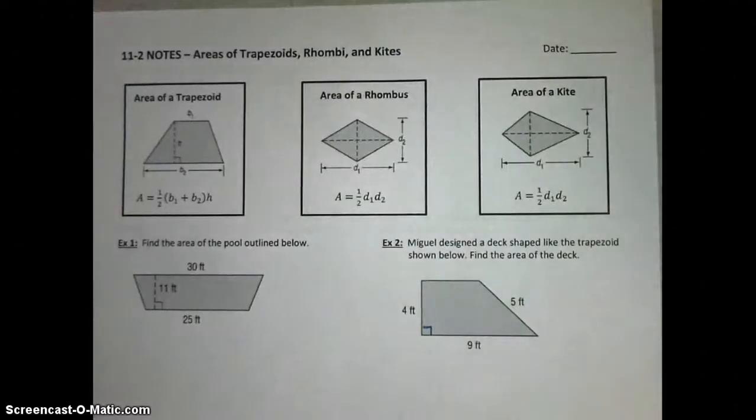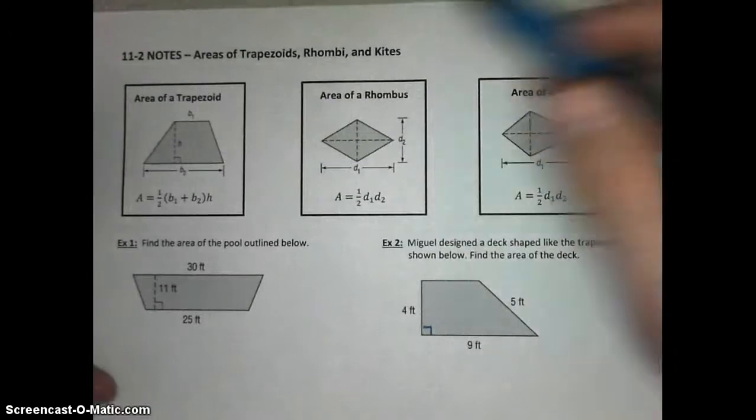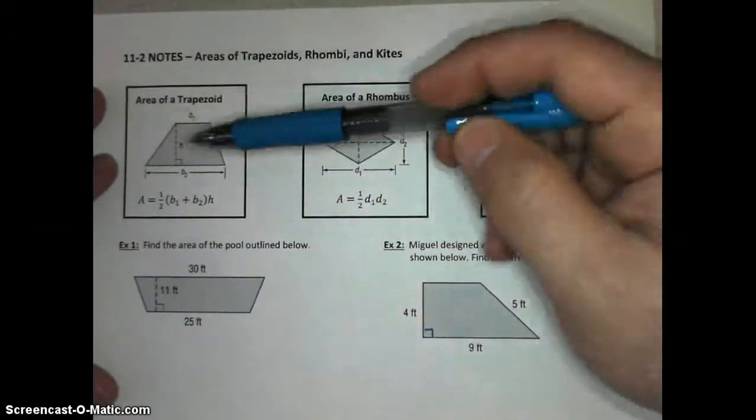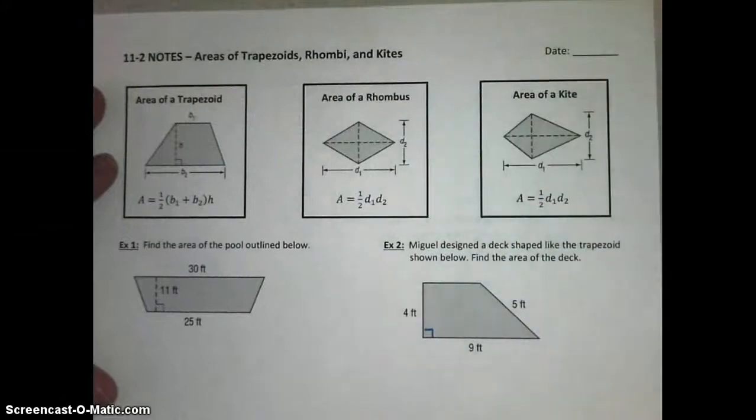All right, here we are with lesson 11.2, which is where we're talking about areas of trapezoids, rhombi, which is the plural of rhombus, and kites. Now, we are really just dealing with two formulas, as we'll explain in a second.